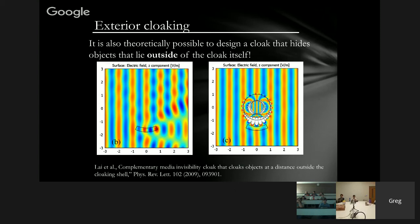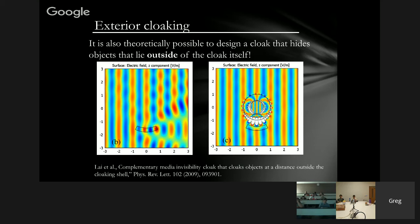Let's talk about some more fun possibilities with theoretical ideas. One surprising observation from 2009 is that you don't need to have your invisibility cloak around the object you're trying to hide — this is called exterior cloaking. An exterior cloak is not surrounding the object, but it's tailored so that the combination of the object and the exterior cloak makes the combination completely invisible. So in principle, it's possible to make a cloak that stands next to you and makes you invisible, as opposed to being around you.